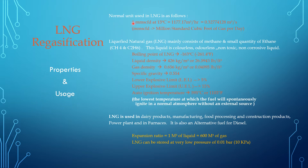Normally, the unit used in LNG is MMSCFD — that is million standard cubic feet of gas per day. 1 MMSCFD at a standard temperature of 10 degrees centigrade is 0177.17 meter cube per hour, or 0.3274128 meter cube per second.